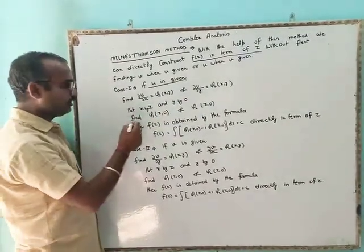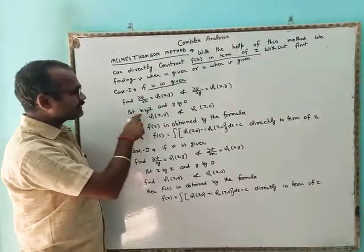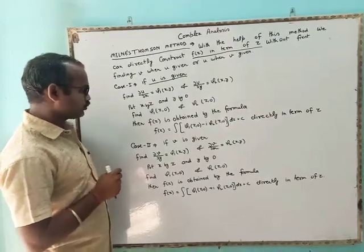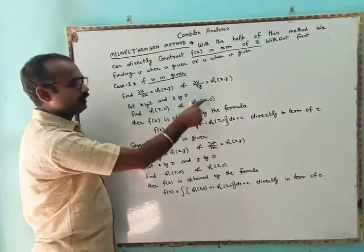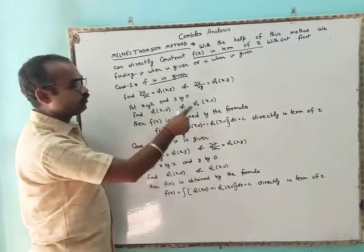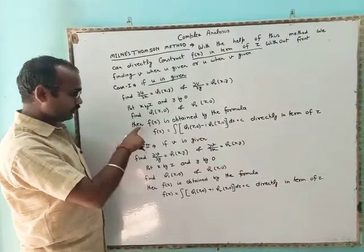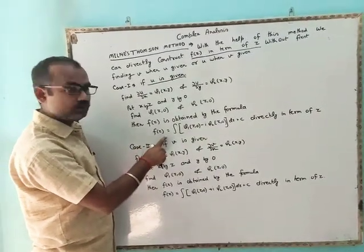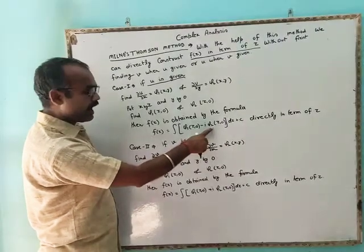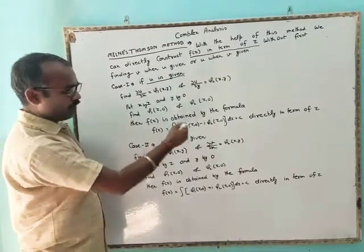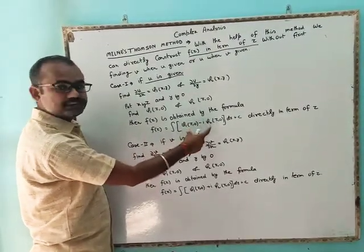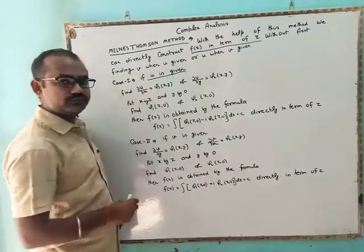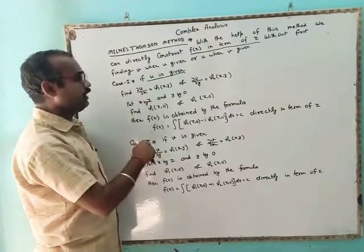Next, put x = z and y = 0 in φ₁(x, y) and φ₂(x, y) to get φ₁(z, 0) and φ₂(z, 0). Then f(z) is obtained by the formula: f(z) = ∫[φ₁(z, 0) − i·φ₂(z, 0)] dz + c. We substitute the values of φ₁(z, 0) and φ₂(z, 0), simplify, and integrate with respect to z to directly find the value of f(z) in terms of z.